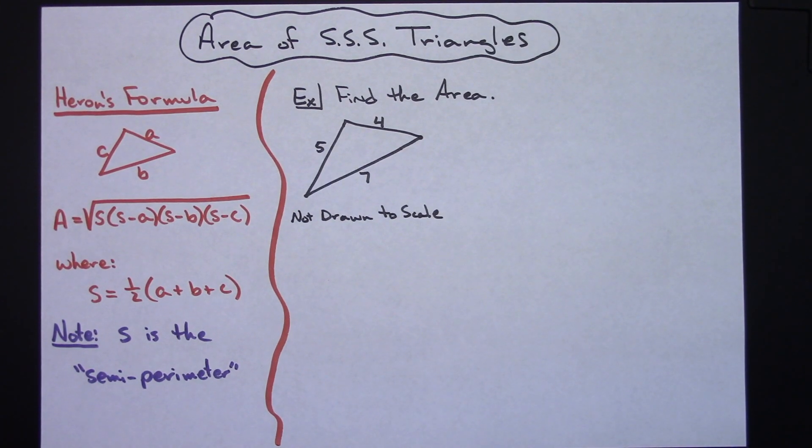In this video I'm going to be taking a look at the area of a side side side triangle. This can be done by using Heron's formula. So over here I've got that all spelled out.